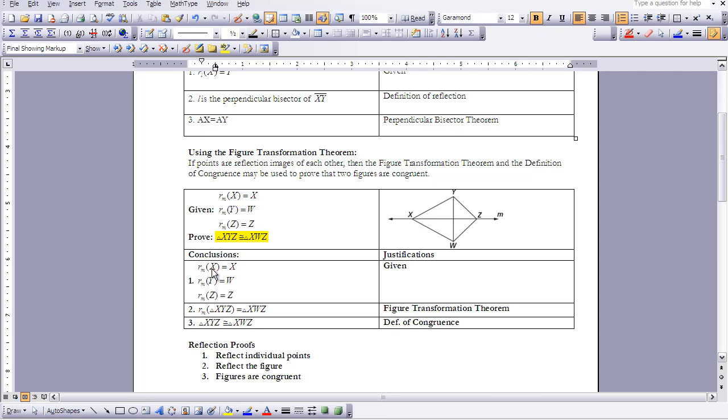That's what we're going to do here. We reflected the individual points of the triangles, so now we can say the figures themselves, the triangles themselves, have been reflected. That's the Figure Transformation Theorem.